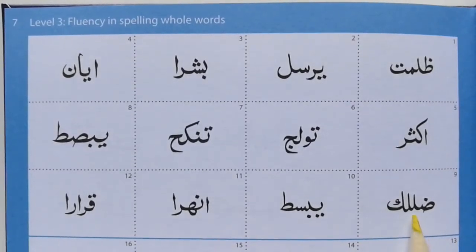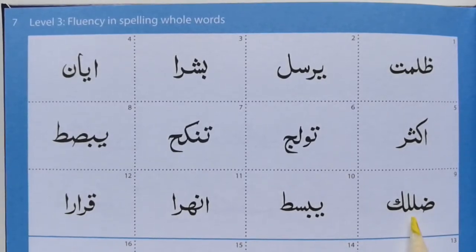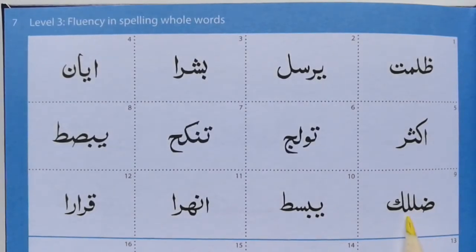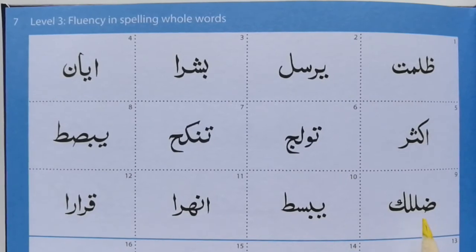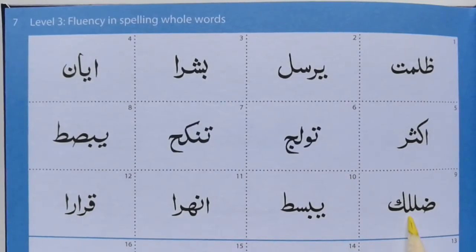See here — you can wonder sometimes, is that an Alif? Because look how long it is. But if you look carefully, it's joining to the letter before it and after it. Then the second Laam — that's joining to the letter before and after it as well. But we know Alif won't join to the letter after. So straight away you know it's Laam, or Laam.